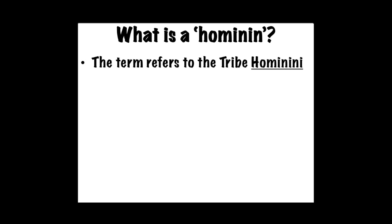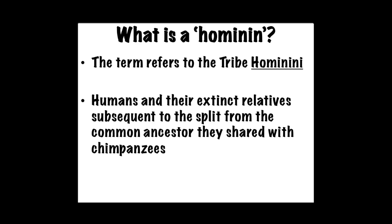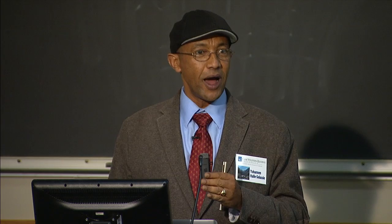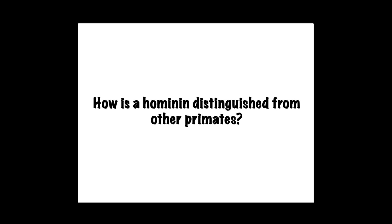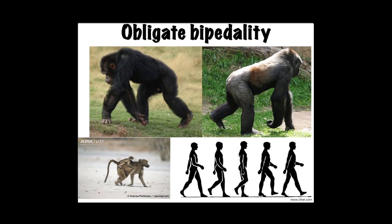Now let's define what a hominin is — the group we're going to talk about for the rest of the time. The term 'hominin' is a short version of the tribe Hominini, which is below the subfamily level. This group includes us humans and all our extinct relatives subsequent to the split from the common ancestor we shared with chimpanzees. All taxa that came after that split from the common ancestor we share with chimpanzees would be in our group.